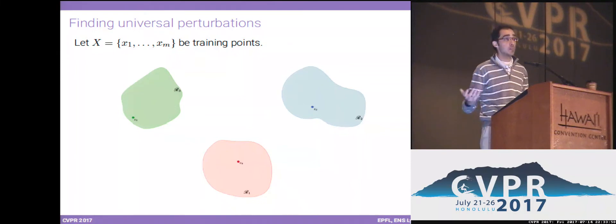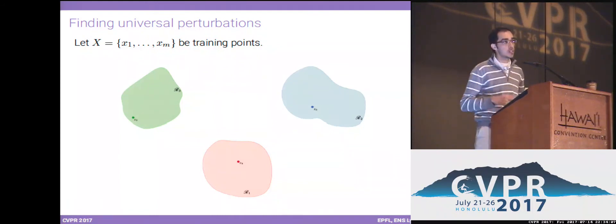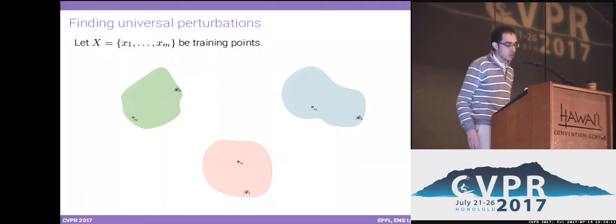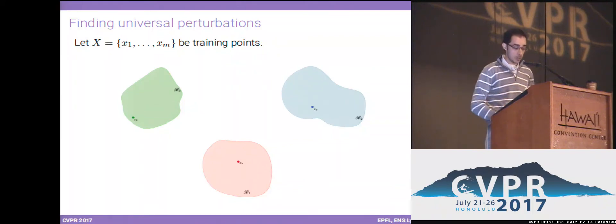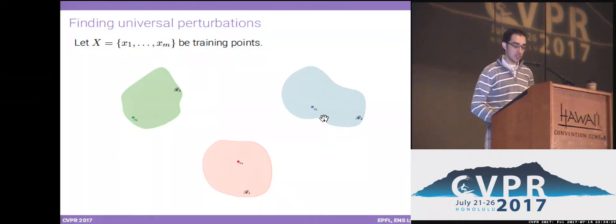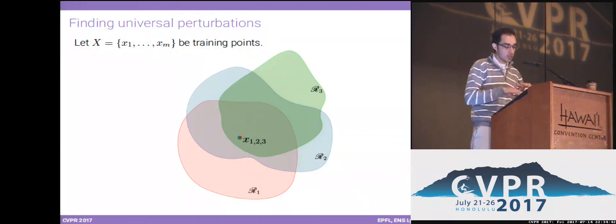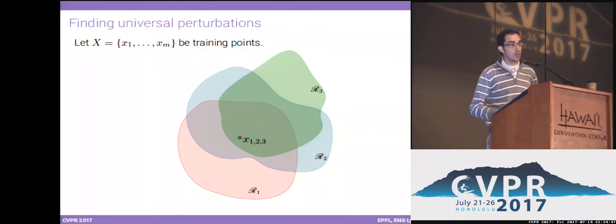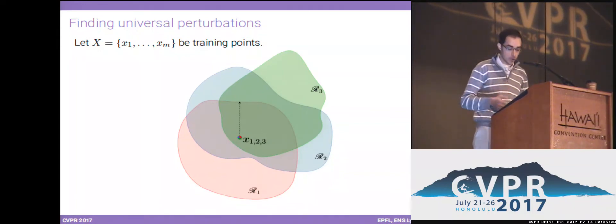Assume we have a bunch of training images x1 to xm. Each image can be represented as a point in the pixel space — here shown in 2D for simplicity. Around each data point, I show the classification region associated to it. If I take any point in a classification region, it is classified the same way as the corresponding data point. Now, putting all classification regions on top of each other, the goal of finding a universal perturbation becomes finding a perturbation that goes outside the union of all these regions. We start with the first point and find a perturbation that goes outside its region.